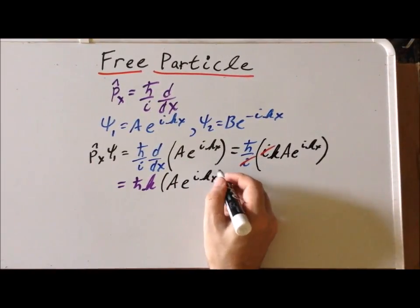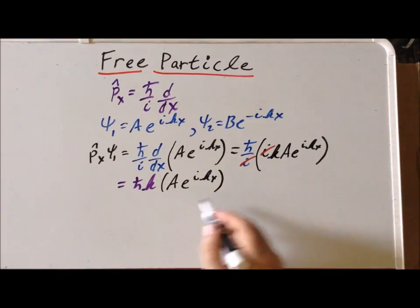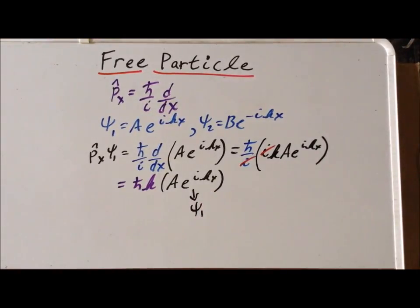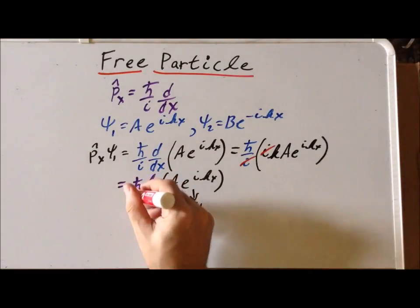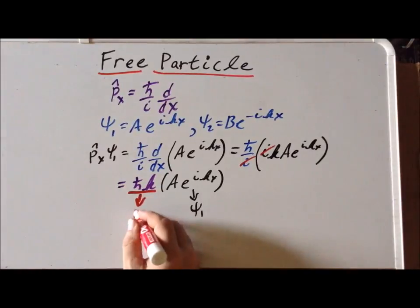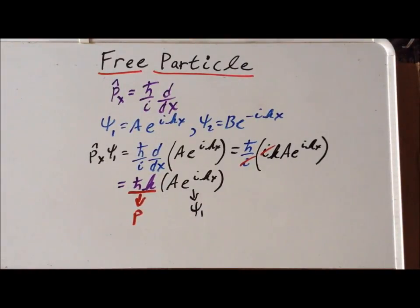And we notice that the expression we've written is the wave function psi 1 returned. So that tells us the coefficient in front here, h-bar k, is the momentum. So this gives us the value of the momentum for a particle that is described by this particular wave function.